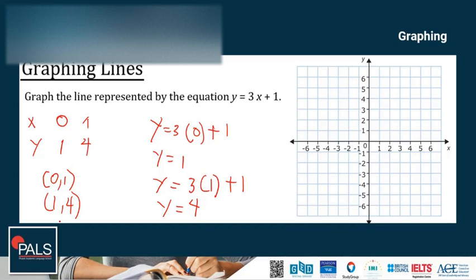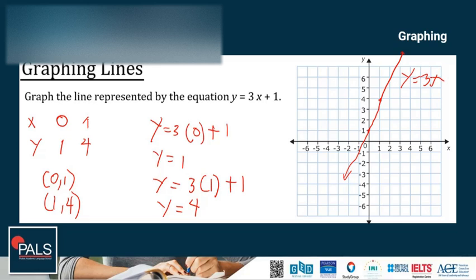Let's plot these on the coordinate plane. The first point is (0, 1): X is 0, so it's at the origin, and Y is 1, so 1 unit up. The second point is (1, 4): 1 unit to the right and 4 units up. Then we connect the points. This is the graph for the equation Y = 3X + 1.